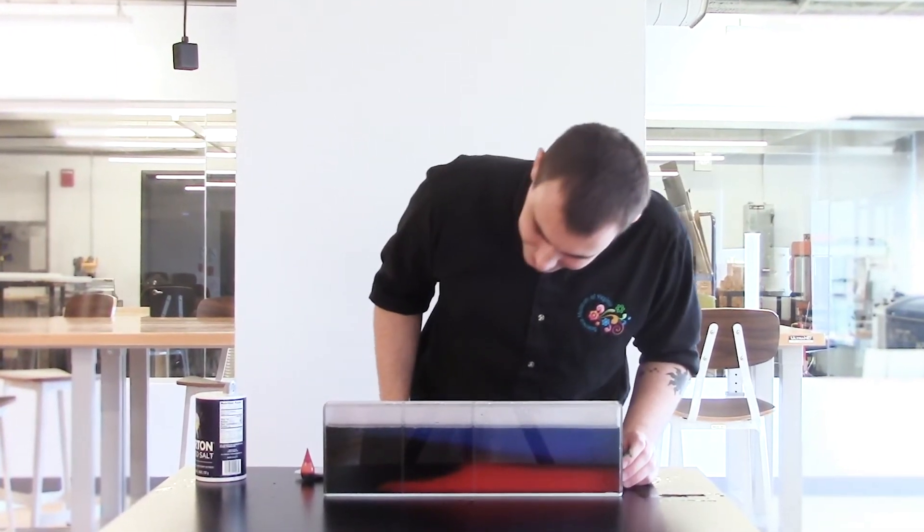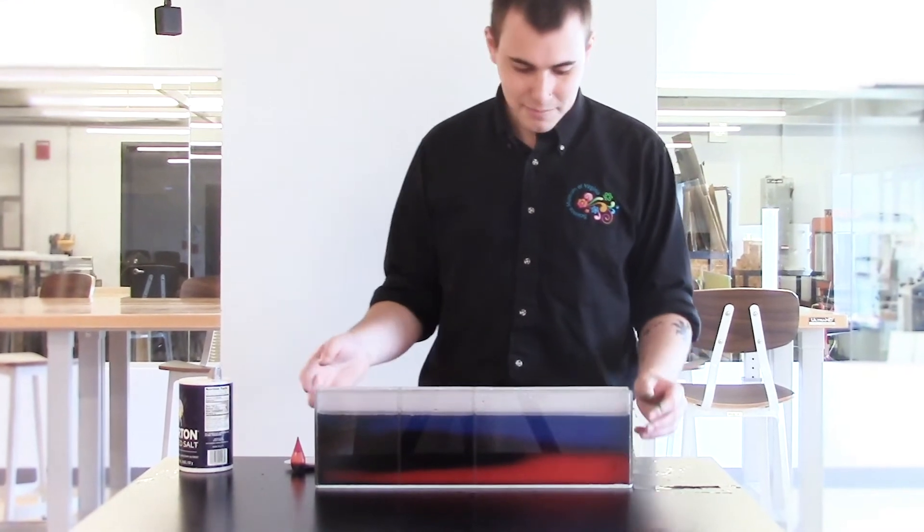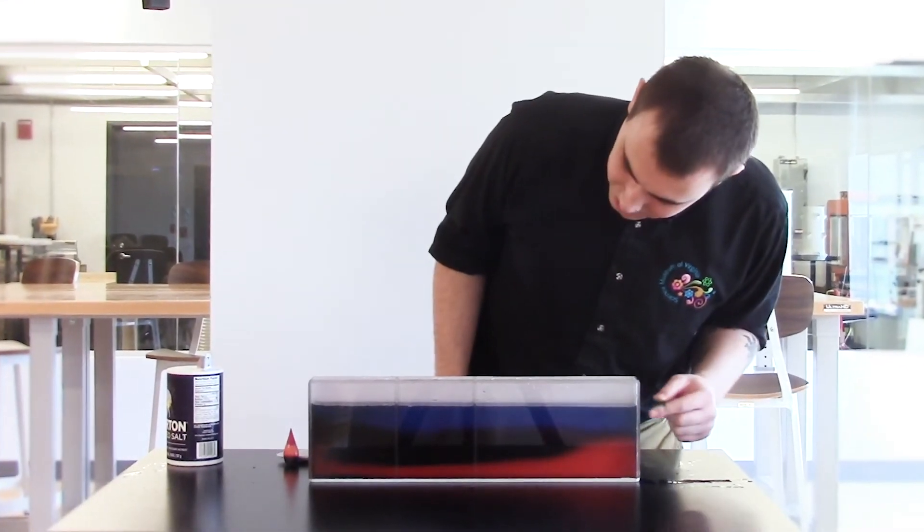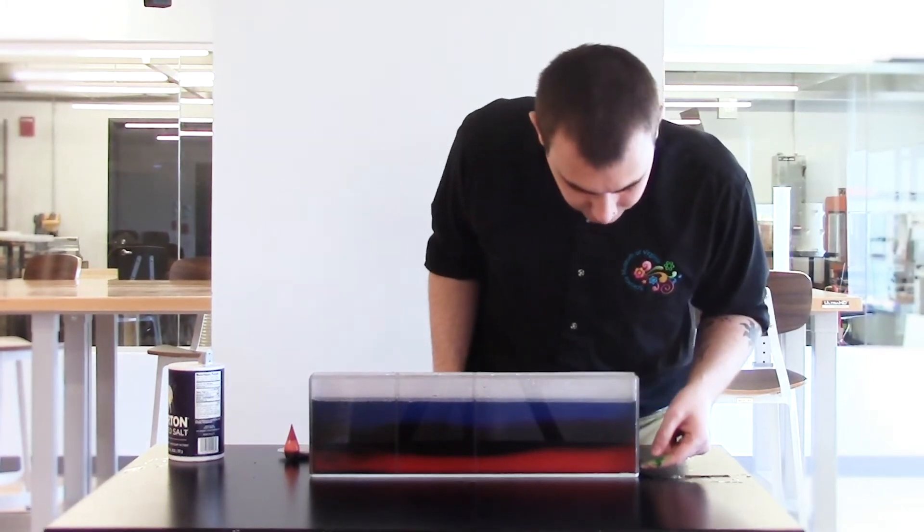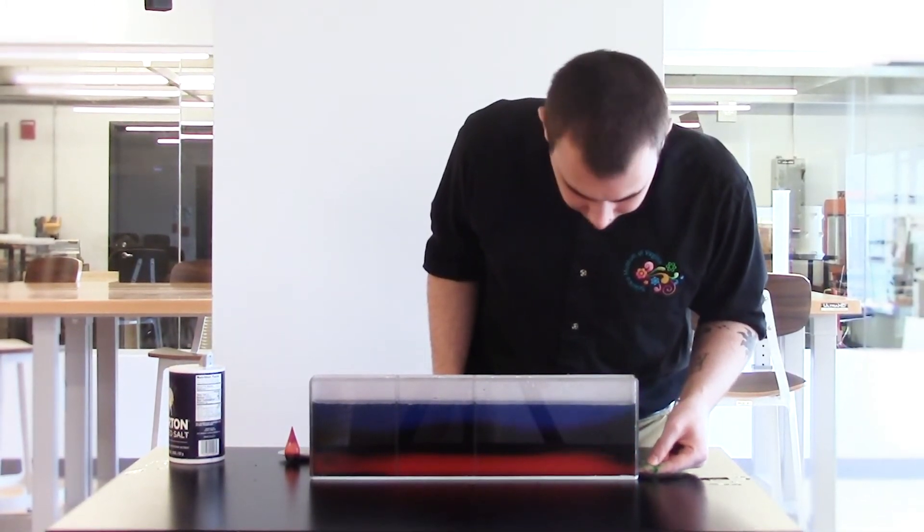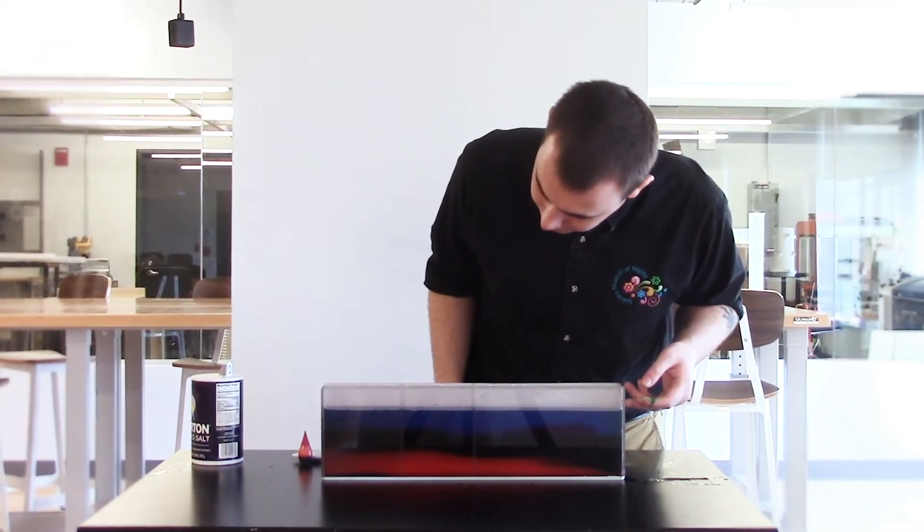So you can see that green going across the middle now. Is that what you expected to happen? So we can see that the more salt is in water, the denser it's going to be. So we have our, once again, red salt water, our green in-between, and our blue fresh water.